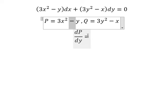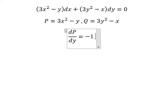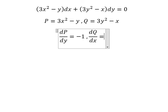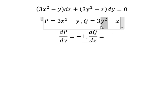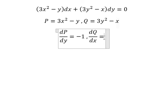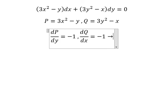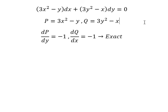So we have negative one. This part doesn't have Y, so you get zero. Next, for the derivative of N with respect to X — this part doesn't have X, so you get zero. This part gives us one and negative one. We can see that both results are the same, so this equation is exact.